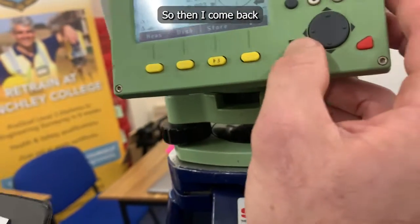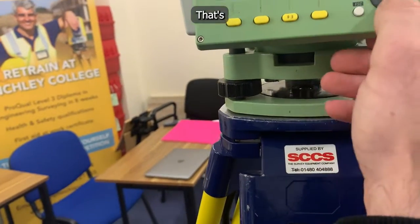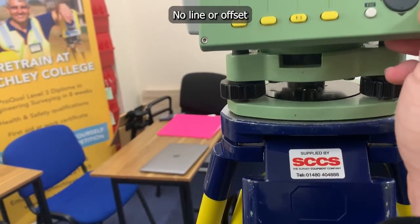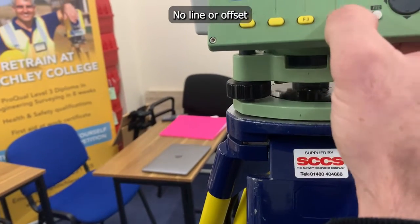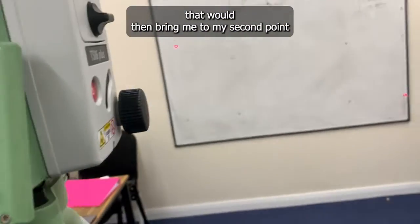So that's that. Then I'll come back. I know it's 650 depth. I'll change my height to 0.650. No line or offset. That will then bring me up to my second point here.